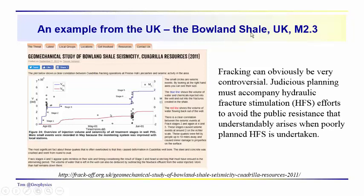Here's an example from the Bowland Shale in the United Kingdom, where there's strong opposition to fracking, primarily because of what happened there. This received a lot of public outcry against fracking. Most of the events occurred during the fracking process — during the initial stage of large-volume injection, then fewer events during smaller injection volumes, and then more events when the injection volume was raised again. The difference between flow back and injection volumes represents the amount of fluid remaining in the formation.